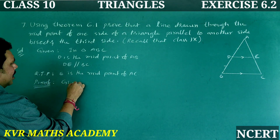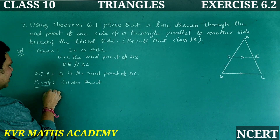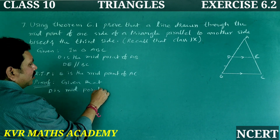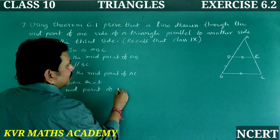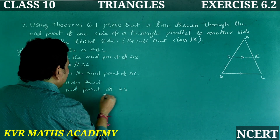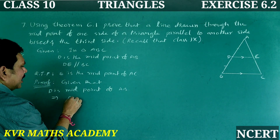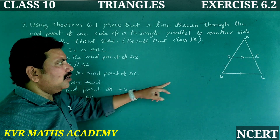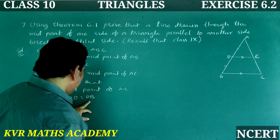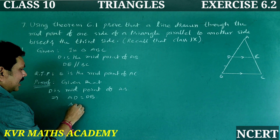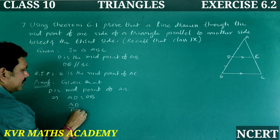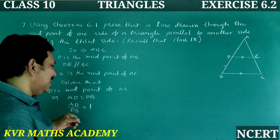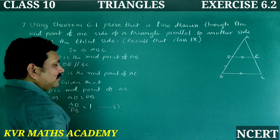Given that D is the midpoint of AB, that implies AD is equal to DB. Therefore, AD divided by DB is equal to 1. — equation (1).